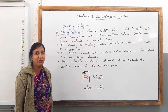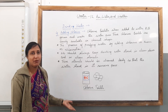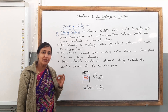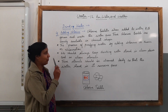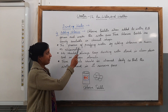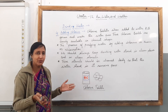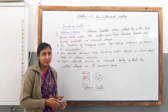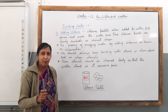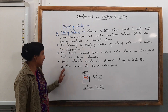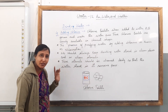In today's class, you have come to know about the process of chlorination and how you can make water suitable for use. Let us revise the topic. Chlorine tablets, when added to water, kill germs and make the water pure. These chlorine tablets are easily available at the chemist's shop. The process of purifying water by adding chlorine is known as chlorination.